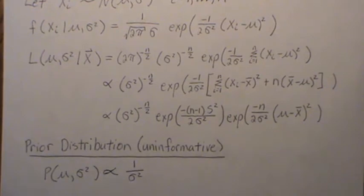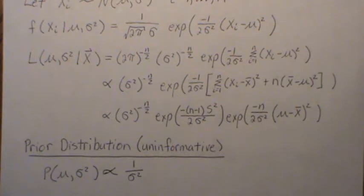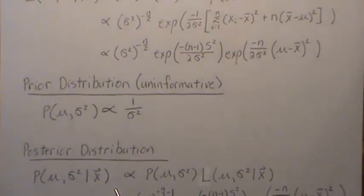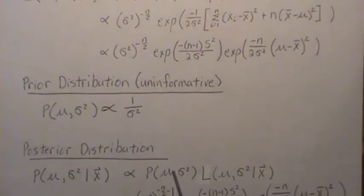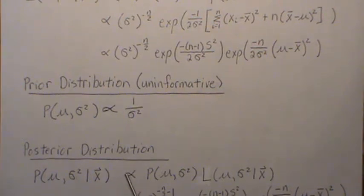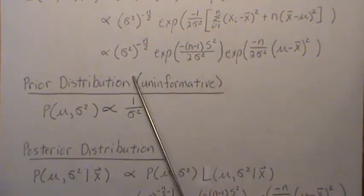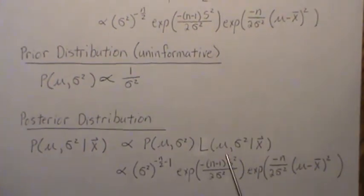In Bayesian analysis we need a prior distribution. We use a prior of one over sigma squared, called an uninformative prior — we're not assuming anything about mu, and our prior on sigma squared is essentially flat, meaning it's equally likely to be anywhere. The posterior distribution is proportional to the prior times the likelihood. We use proportionality rather than equality because dividing by the joint PDF of the X_i's is not necessary since it's constant. We bring down the prior and combine relevant terms.